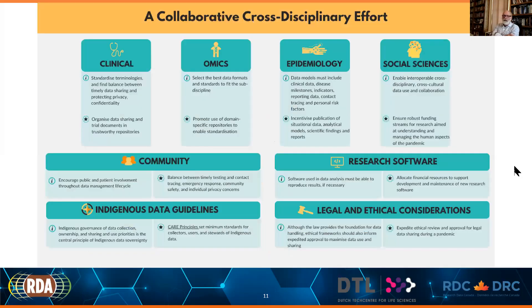The four thematic areas were clinical, omics — meaning genomics or metabolomics and different forms of the science of omics — epidemiology, and the social sciences. The cross-cutting or common themes were community participation, research software, indigenous peoples and indigenous data, and legal and ethical considerations. Those are the eight core sections in the guidelines and recommendations, along with an overarching text that pulled the common elements across all eight areas.